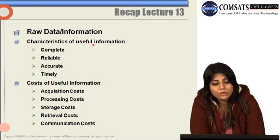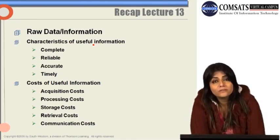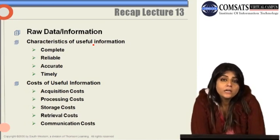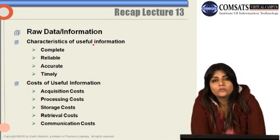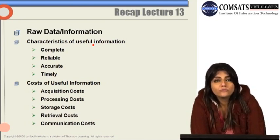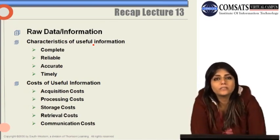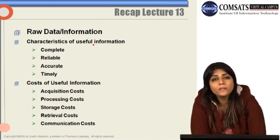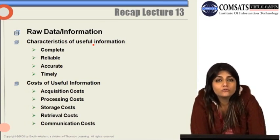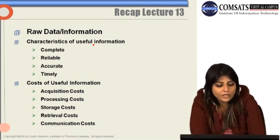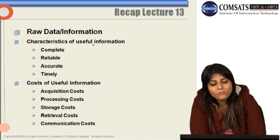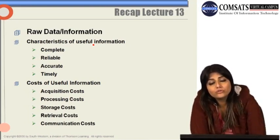The second type of cost is the processing cost — the cost attached to processing the information you have acquired. For example, with questionnaires, once you have obtained all responses, you need to enter them into your system manually, process all that information, and categorize it. All of that is the processing cost. Then there are storage costs — where you store that information.